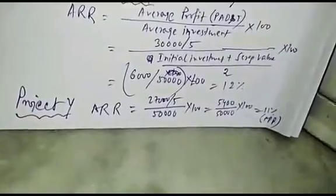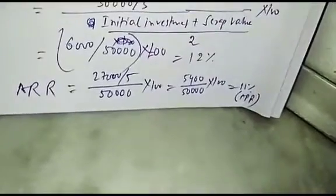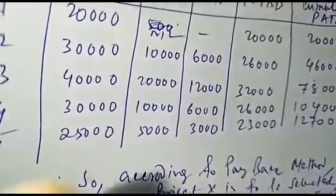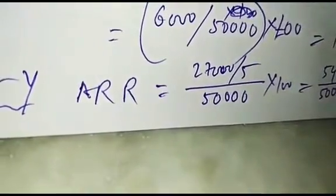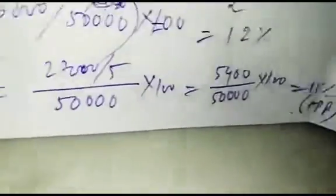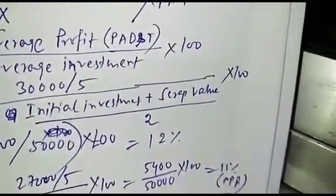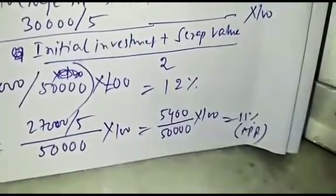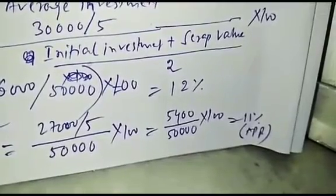For project X, PAT was 6,000, 9,000, 12,000, 3,000, nil. Total is 30,000 over 5 years, so average profit is 30,000 by 5 = 6,000. Average investment is initial investment plus scrap value divided by 2. Here scrap value is zero, so 1 lakh by 2 = 50,000. So ARR is 6,000 by 50,000 times 100 = 12%. For project Y, PAT totals 27,000, average is 27 by 5, so ARR is 11%. Machine X gives 12% return, Y gives 11%, so you will select X because ARR is higher.